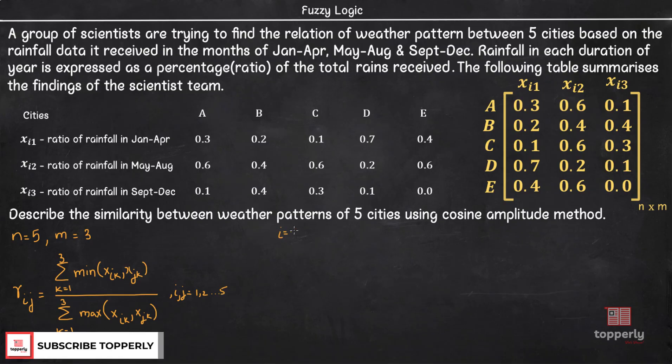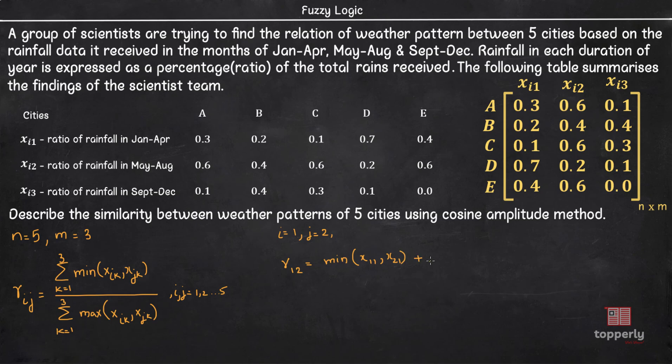So, for i equal to 1 and j equal to 2 we have R12 equal to minimum of (x11, x21) plus minimum of (x12, x22) plus minimum of (x13, x23), the whole divided by maximum of (x11, x21) plus maximum of (x12, x22) plus maximum of (x13, x23).